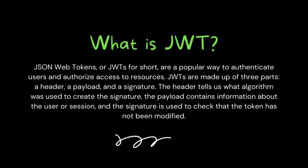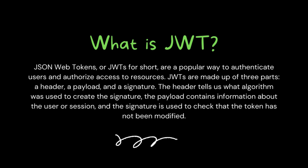What is JWT? JSON web tokens, or JWT for short, are a popular way to authenticate users and authorize access to resources. JWT are made up of three parts: a header, a payload, and a signature. The header tells us what algorithm was used to create the signature. The payload contains information about the user or session, and the signature is used to check that the token has not been modified. You will see how it looks in the further part of the video.